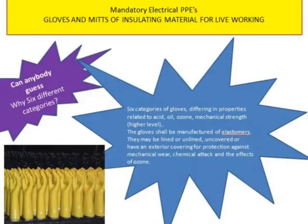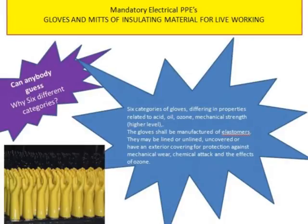The six different class categories differ on the basis of properties related to acid, oil, ozone, and mechanical strength. The glove shall be manufactured of elastomers. They may be lined or unlined, uncovered, or have an exterior covering for protection against mechanical wear, chemical attack, and the effects of ozone.